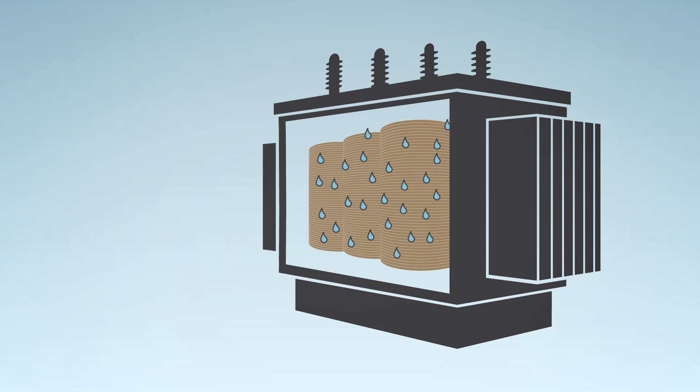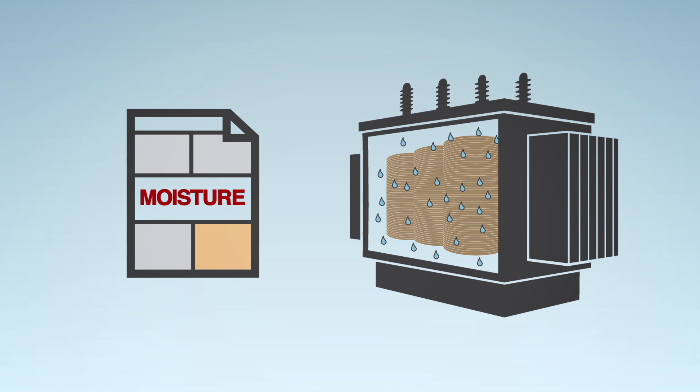So you dry the oil, but over time the moisture in the paper just seeps right back in. And before long, you have the same really high moisture levels again in your test results. This temporary solution is really no solution at all.